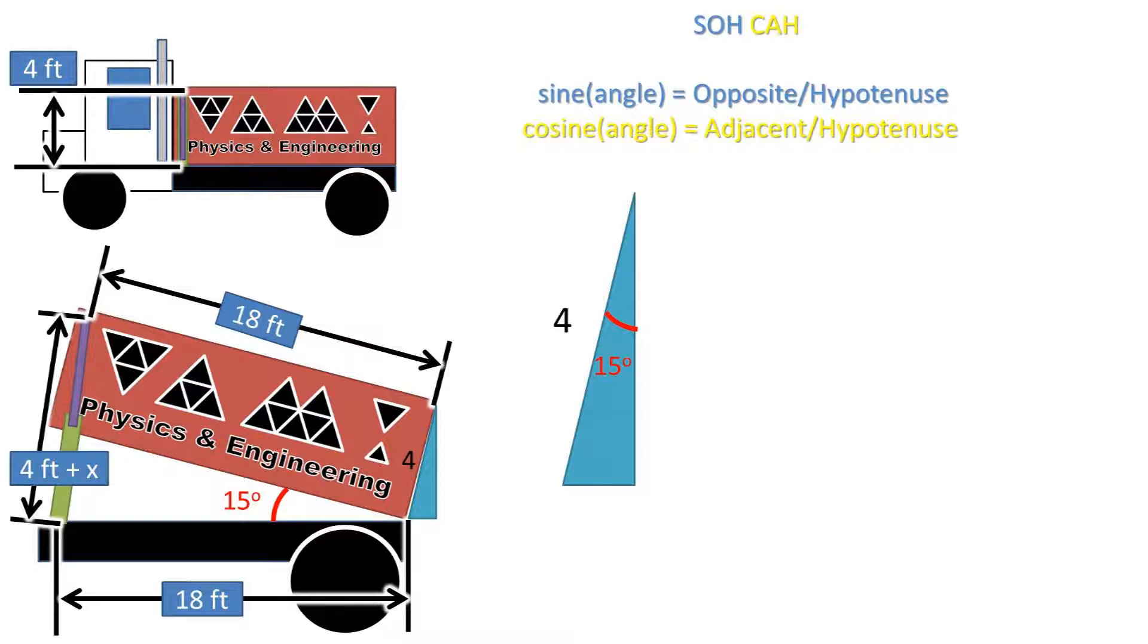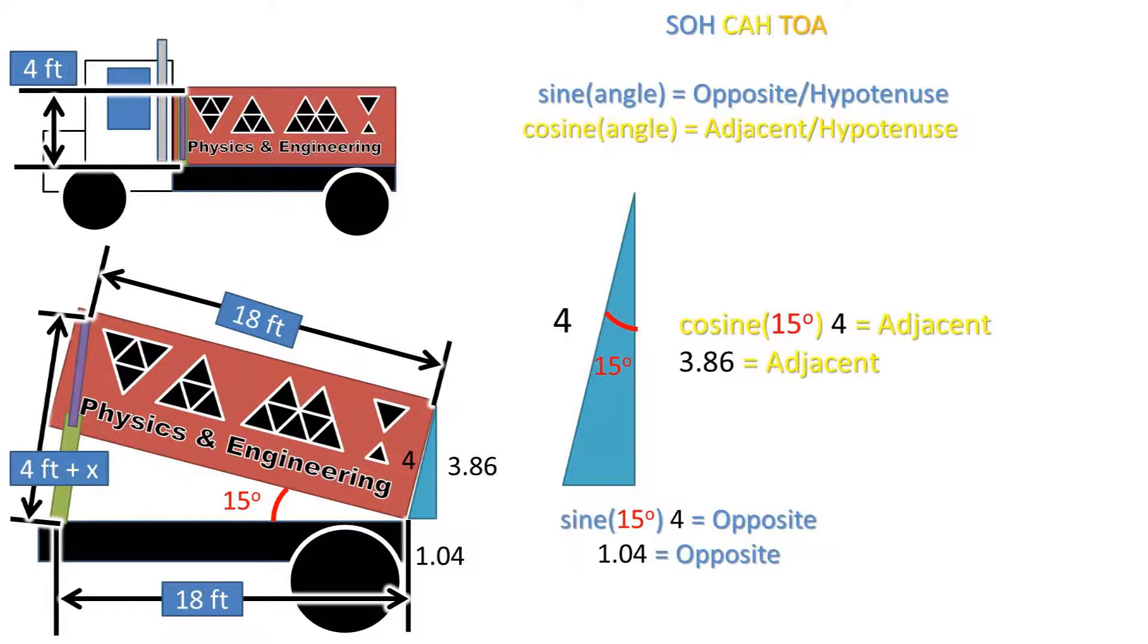And the cosine portion, which is the cosine of the angle, is equal to the adjacent leg to that angle over the hypotenuse. Plugging in our numbers and rearranging the formulas to get what we are solving for, we get an adjacent leg of 3.86 feet and an opposite leg of 1.04 feet. I am using two decimal places and rounding, so your answers may vary slightly.